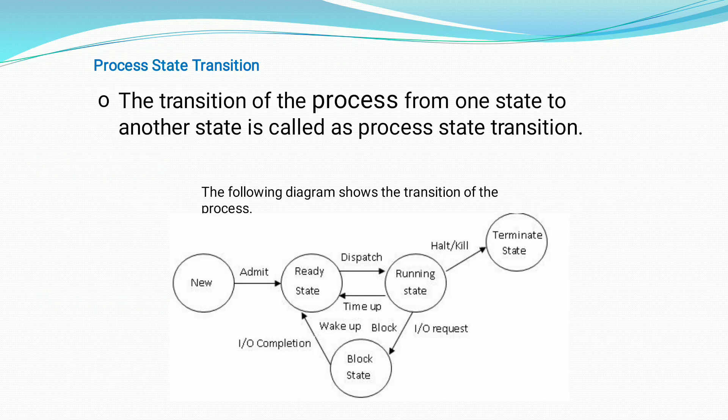This can be explained by the process state transition diagram. The process state transition diagram represents the transition of the process from one state to another state, called process state transition. For example, the process which is in the ready state can only move to the running state.